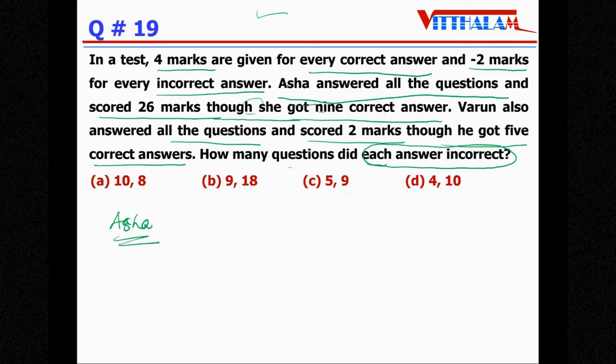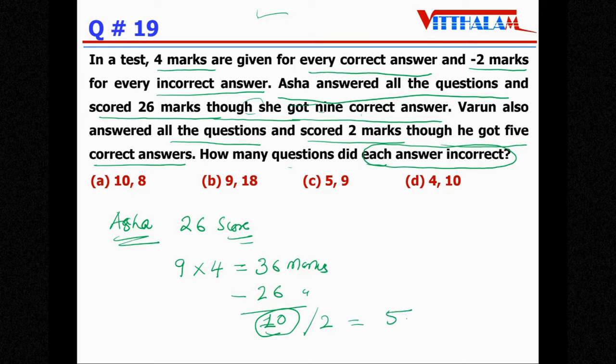Asha, how many correct answers? Score is 26 that's the score and nine was the correct answer. So that means she is supposed to get 9 into 4, 36 marks if there is no negative marking, if there is no penalty for incorrect answer. But unfortunately she got 26 marks, that means 10 marks has been deducted.